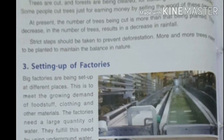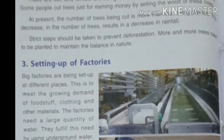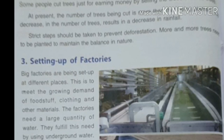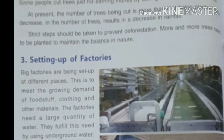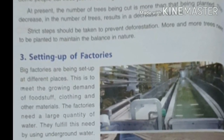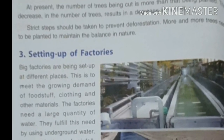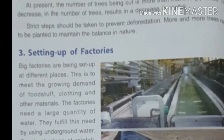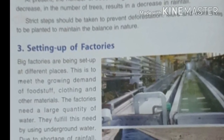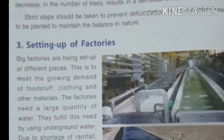Now the main factor of decrease in rainfall is the setting up of factories. As the demand increases for foodstuff, clothing, and other materials, we need to set up more and more factories, and factories need a large quantity of water.